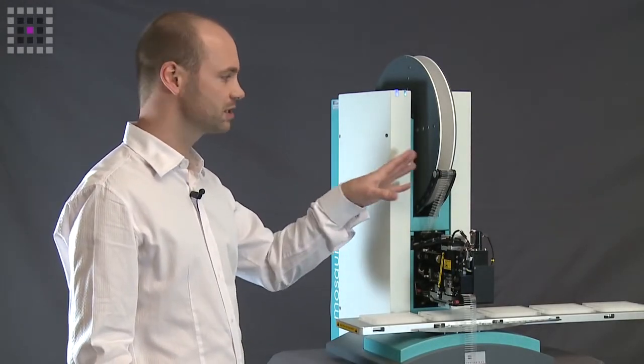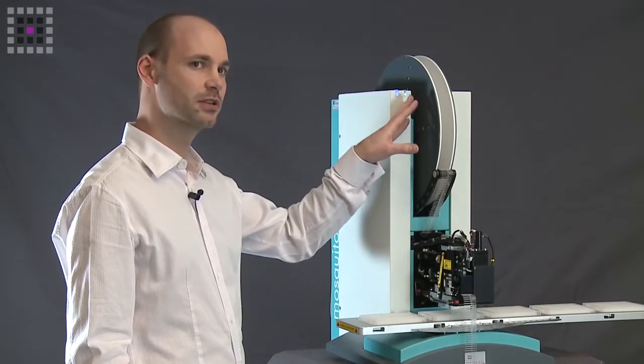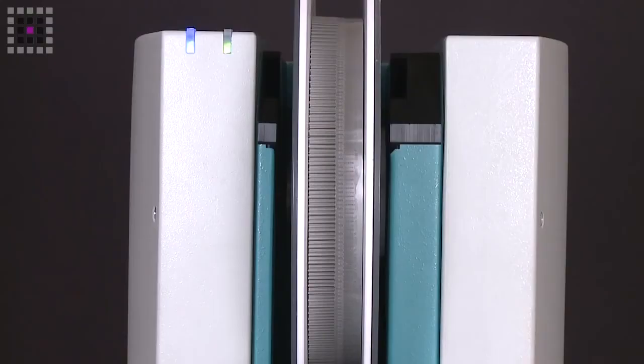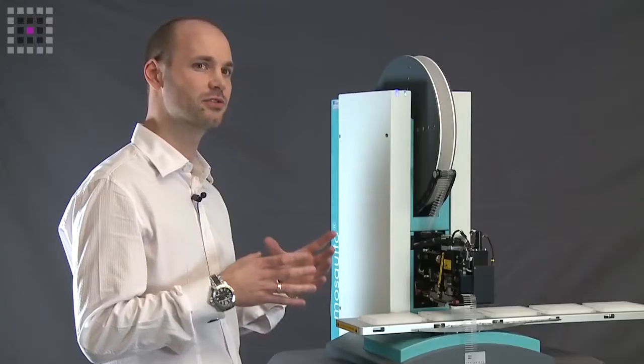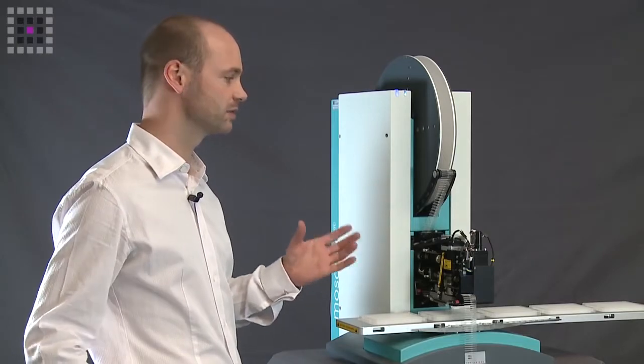The tips are stored on this spool at the top of the instrument. Each spool contains 36,000 tips, so it's a very high density media for storing disposable pipette tips compared to traditional boxes or racks.